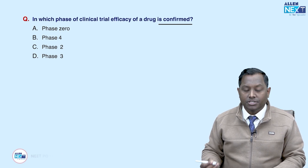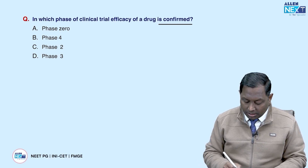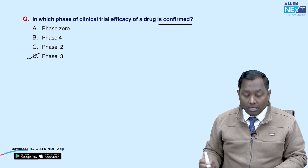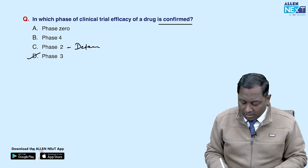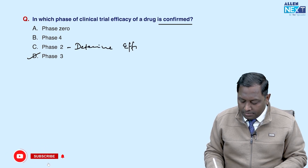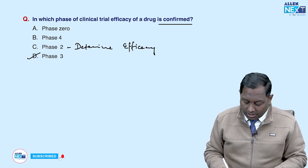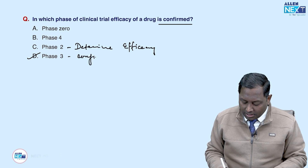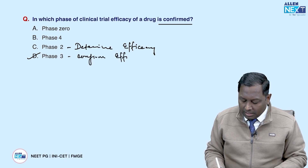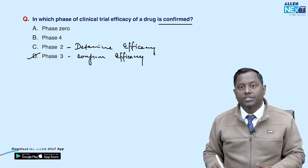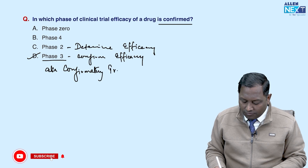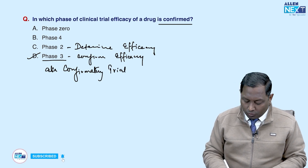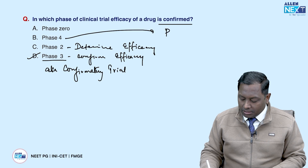In which phase of clinical trial is the efficacy of the drug confirmed? Whenever they use the term 'confirmatory trial,' that is none other than Phase 3. Phase 3 is used to determine and confirm efficacy — in fact, the other name for Phase 3 itself is the confirmatory trial.